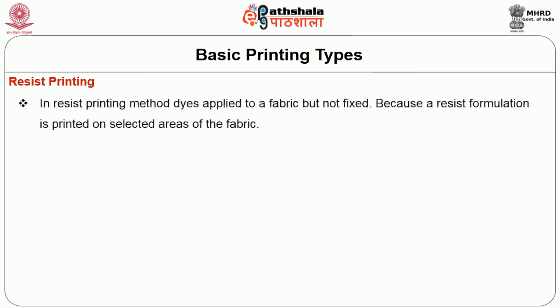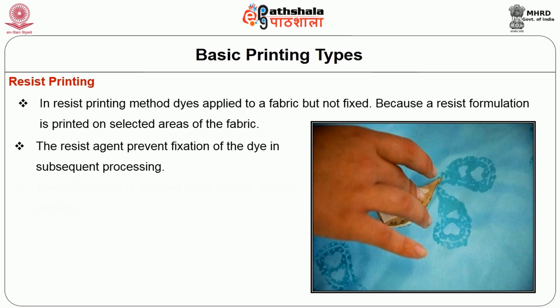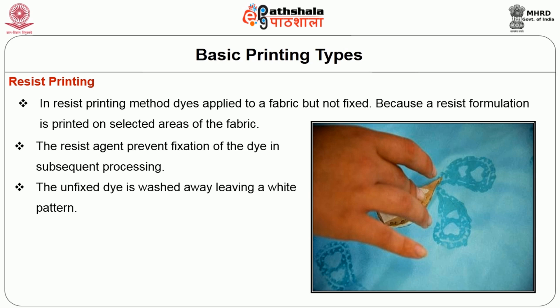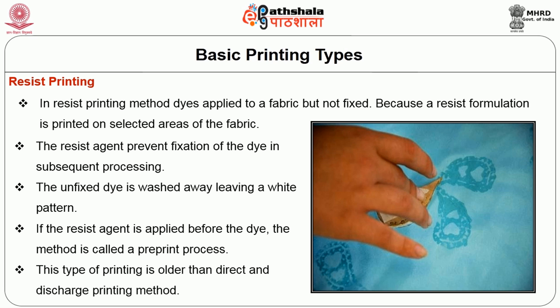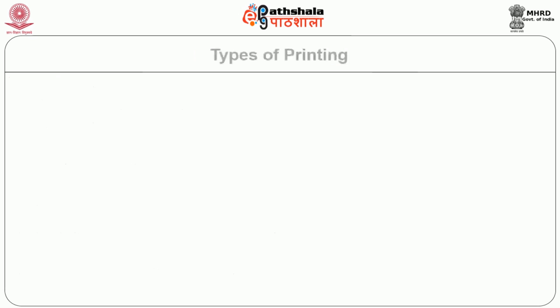In resist printing, dye is applied to a fabric but not fixed because a resist formulation is printed on selected areas. The resist agent prevents fixation of the dye in subsequent processing. The unfixed dye is washed away, leaving a white pattern. If the resist agent is applied before the dye, the method is called a pre-print process. This type of printing is older than direct and discharge methods.